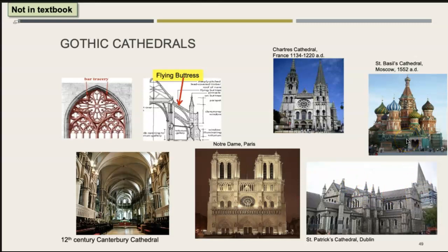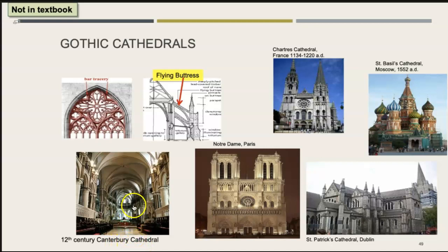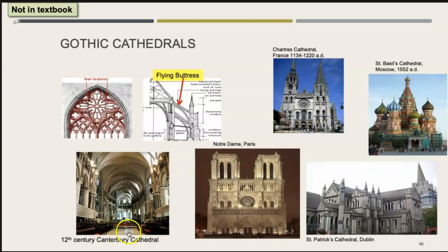Here is St. Basil's Cathedral in Moscow — you've seen it connected with Russia — featuring beautiful points but also interesting bubble onion dome shapes with a Russian flair. This is inside the 12th-century Canterbury Cathedral: notice a nice wide nave aisle with beautiful cross vaults, also called groin vaults, within the structure.